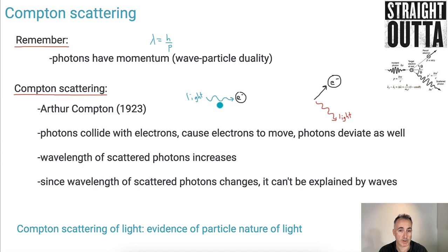It went from a lower wavelength to something with a higher wavelength. The photons collide with electrons, they cause the electron to move, the photon deviates. The wavelength increases. And because the wavelength changes, it can't be explained by waves. Waves couldn't do this. So you could say that the Compton scattering of light is evidence of the particle nature of light.